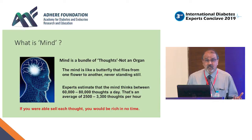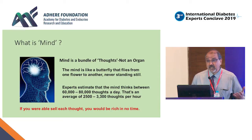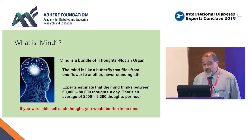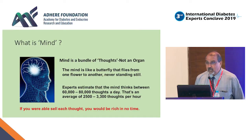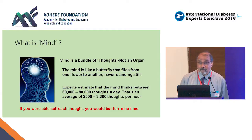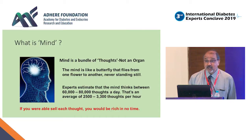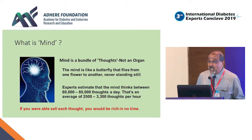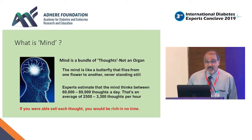Mind is like boiling water which never rests. If you are very distressed, it's boiling water. Experts say 60,000 to 80,000 thoughts a day — that's an average of 2,500 to 3,300 thoughts per hour. With 2,500 to 3,300 thoughts per hour, if you can patent some of your thoughts and sell them, you can be a very rich man in no time.